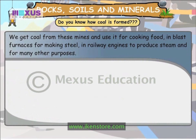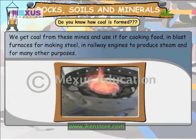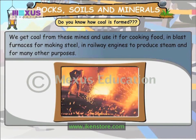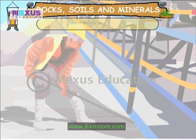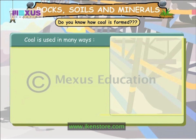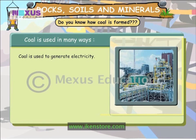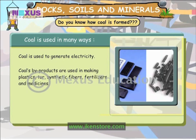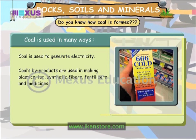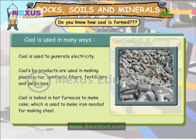We get coal from these mines and use it for cooking food, in blast furnaces for making steel, in railway engines to produce steam, and for many other purposes. Coal is used to generate electricity. Coal by-products are used in making plastic, tar, synthetic fibers, fertilizers and medicines. Coal is baked in hot furnaces to make coke, which is used to make iron needed for making steel.